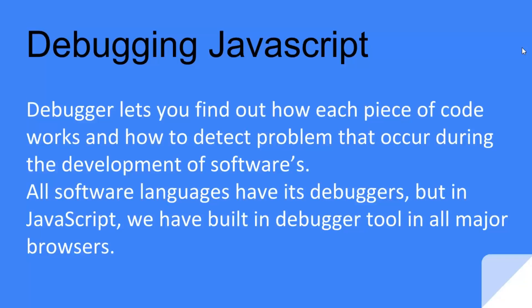In this tutorial I'll be talking about debugging JavaScript. JavaScript is one of the most important languages for web applications and it is used to create interactive and powerful web applications. If you know JavaScript and don't know how to debug it, you are not a very good JavaScript developer. Debugging lets you find out how each piece of your code works and how to detect problems that occur during the development of software. All IDEs and languages have their own frameworks for debugging.